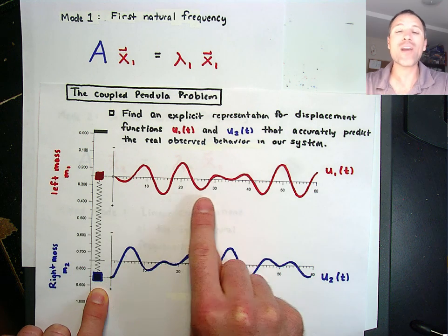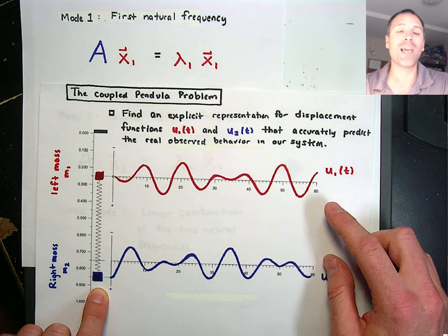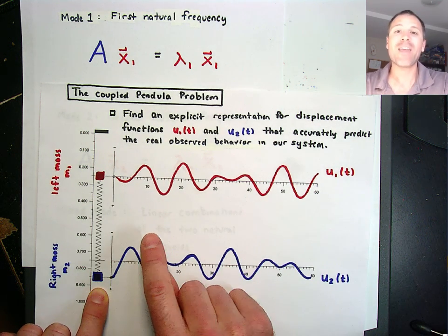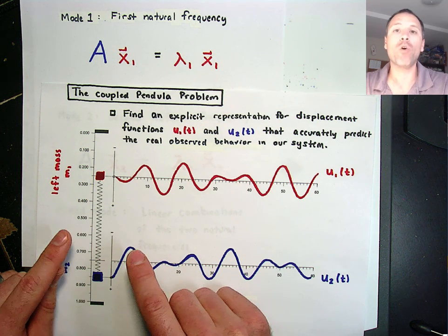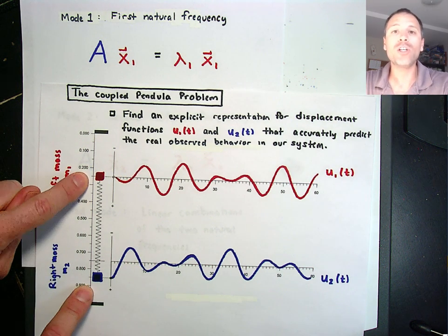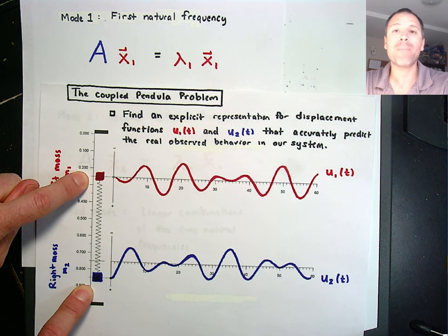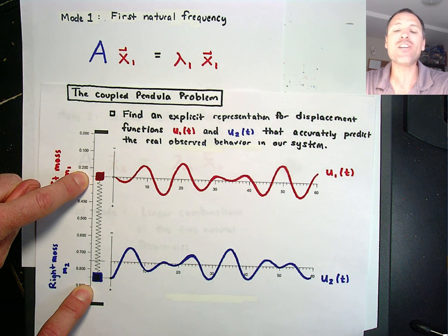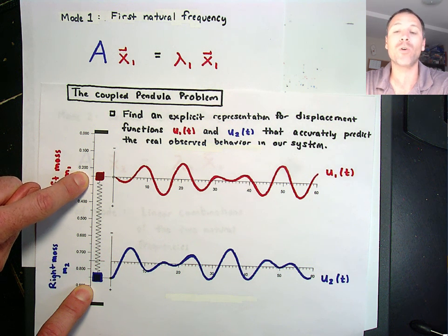the claim is that if I have information about mode 1 and mode 2, the solution to this more complex behavior is going to come as a linear combination of the first two modes.